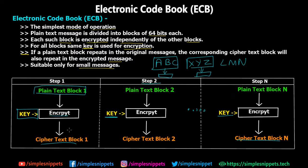Decryption is exactly the reverse process. Using the same key — since ECB operates on a symmetric key algorithm — the cipher text block is taken and the key is used to decrypt and recover the plain text. Step one: take cipher text block one, use the key to perform decryption, get plain text block one. Reiterate this process n times to get all the plain text back in proper sequence.